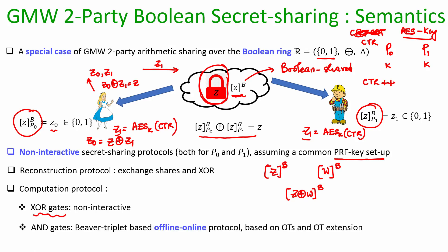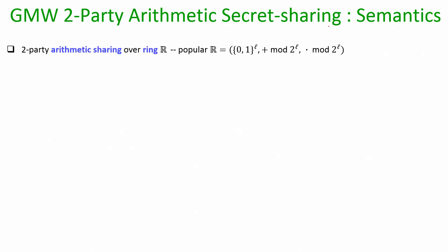AND gates can be evaluated based on the Beaver triplet mechanism, and the Beaver triplet can be generated in the offline phase based on OTs and OT extension. That is how computations are handled in the GMW two-party Boolean secret sharing representation.